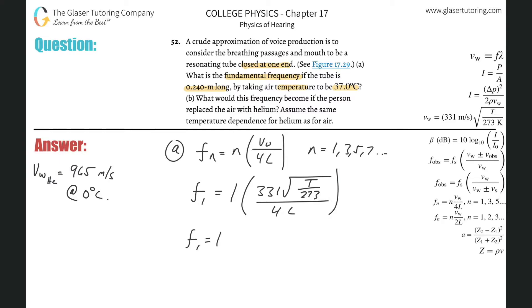And now we have everything we're going to need. So this is 331 multiplied by the Kelvin temperature. The Kelvin temperature is going to be 273 plus that Celsius temperature they gave us, which was 37. And then that's all divided by under that radical, 273, divided by four times that length of the tube. And the length of the tube they told us is 0.24 meters.